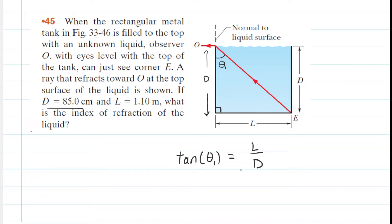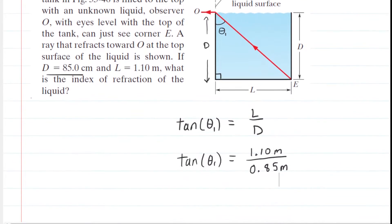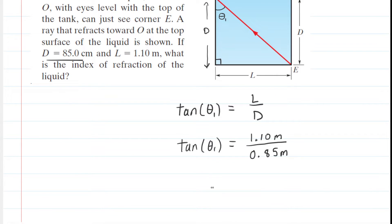After doing that, let's plug in the known values. Now we're going to solve for theta one by taking the inverse tangent of both sides. When you put that into your calculator, you should get theta one as approximately 52.31 degrees.